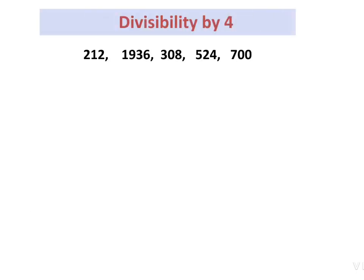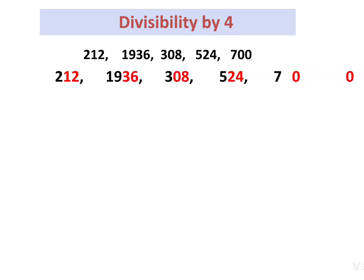First, we discuss divisibility by 4. Consider these 5 numbers. The last 2 digits are marked separately. We consider the last 2 digits. If the last 2 digits are a multiple of 4, then that number is divisible by 4. That is the method.